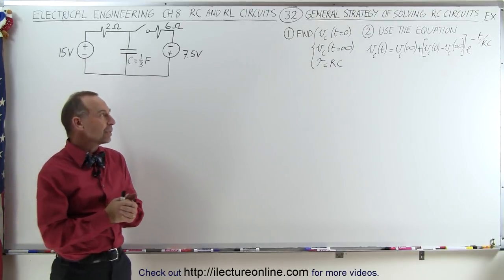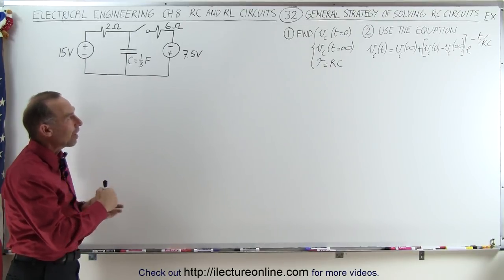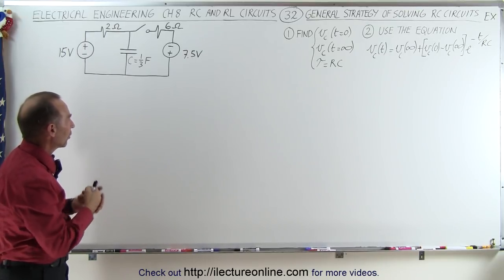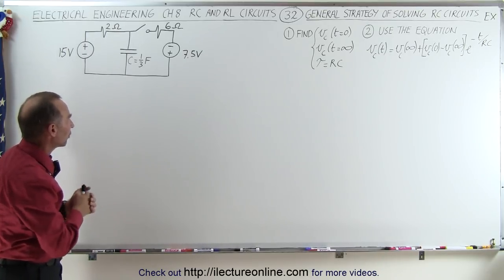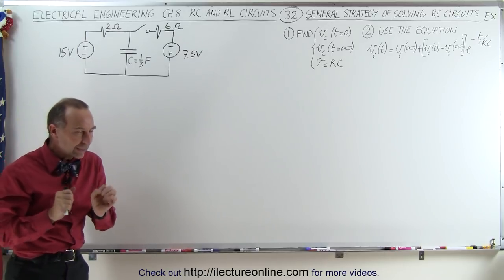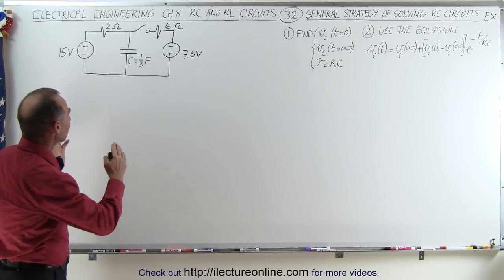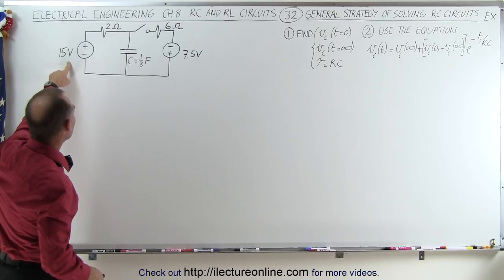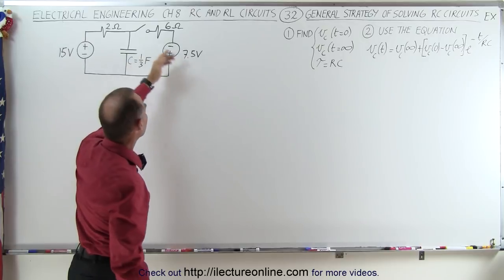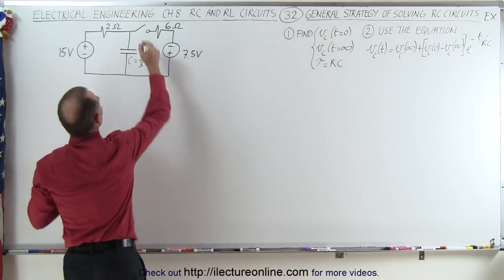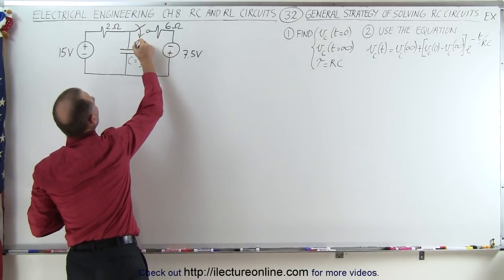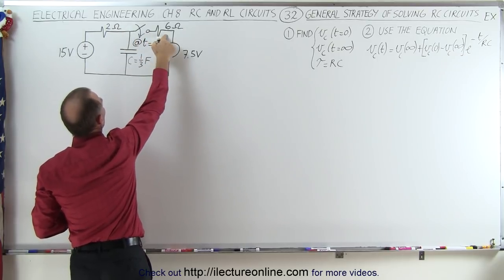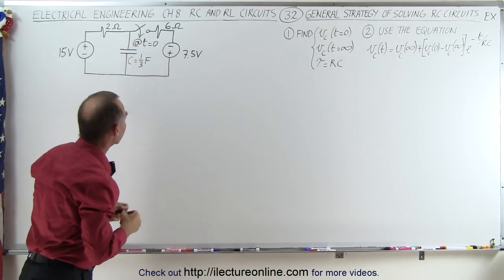Welcome to ElectronLine. Here we have another good example of how to employ our general strategy on solving RC circuits. These are first order RC circuits. The circuit is a little bit different in the way the batteries are placed. We have a 15 volt battery, a 7.5 volt battery, and the switch closes at t equals zero. We have a two and a six ohm resistor and a one-third farad capacitor.